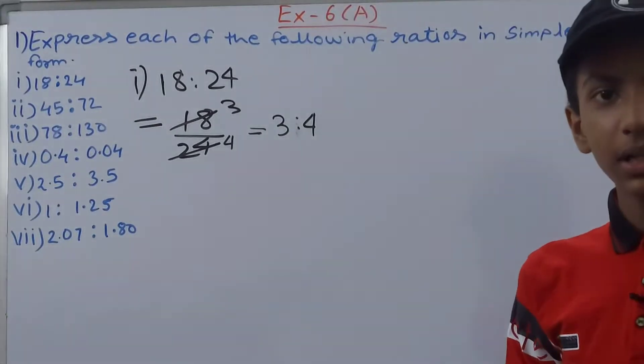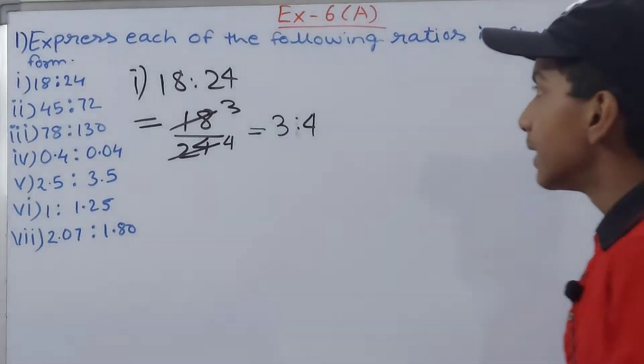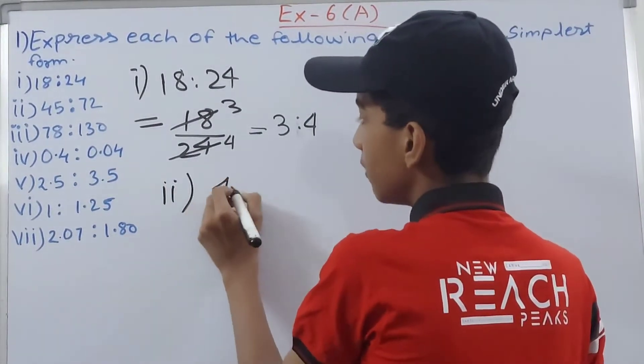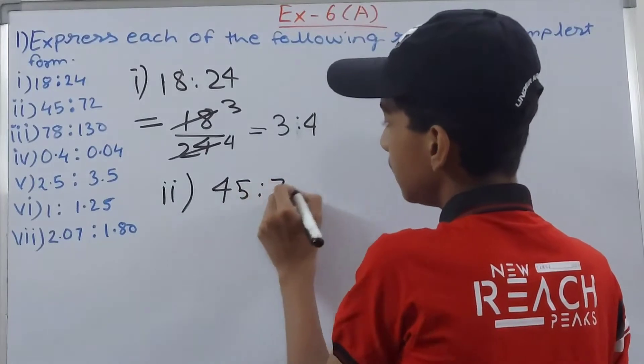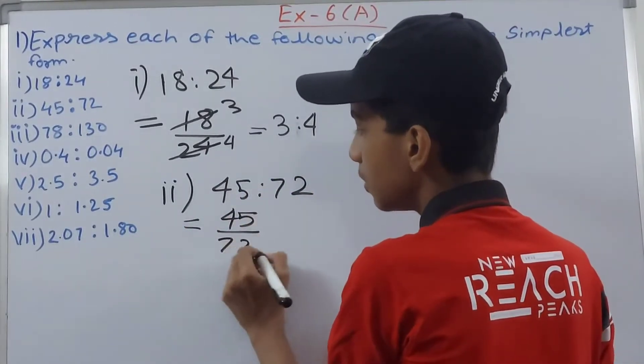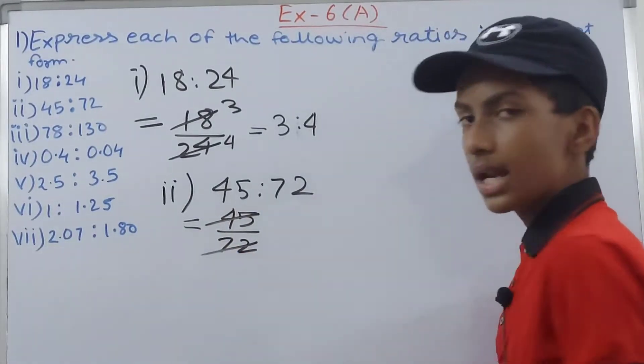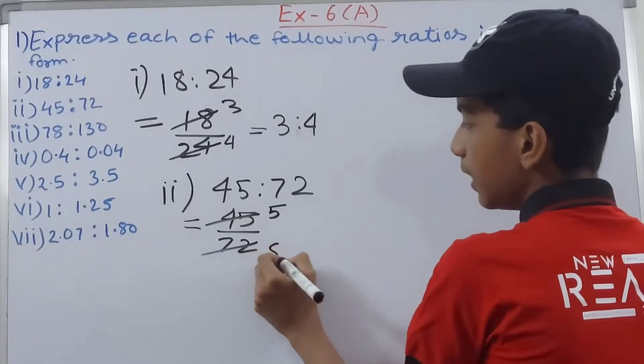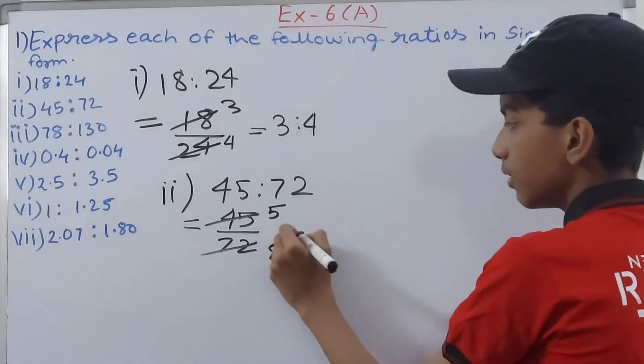Then we have in the second part 45 is to 72, and this will be written as 45 upon 72. Cancel this by 9, so we will have here 5 and here we'll have 8. Can we cancel this any further? No. So write it as it is: 5 is to 8. This is our answer.